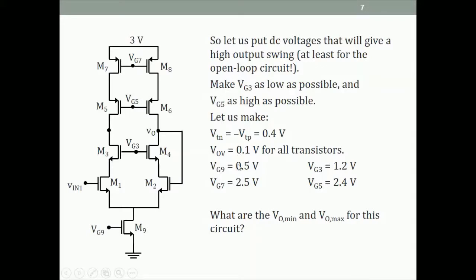We assume threshold voltages of 0.4 V and overdrives of 0.1 V for all transistors. So Vg9 = 0.1 + 0.4 = 0.5 V, and Vg7 = 3 − 0.5 = 2.5 V. To make Vg5 as high as possible: Vg7 = 0.5, overdrive of M8 is 0.1, so this node is 2.9 V, and since Vgs = 0.5, Vg5 = 2.4 V. Vg3 is set to 1.2 V.